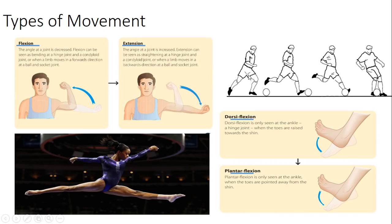Two other types of movements specifically for the ankle area are dorsiflexion and plantar flexion. Dorsiflexion is where the foot raises upwards and decreases the angle at the ankle. Plantar flexion is where you point your foot downwards and open the angle. You can see in this example the gymnast has plantar flexed their ankle joint.